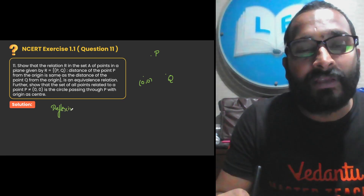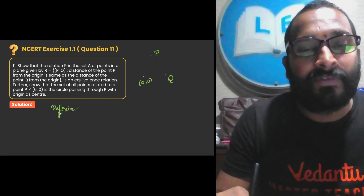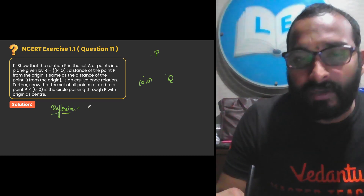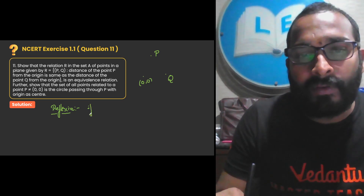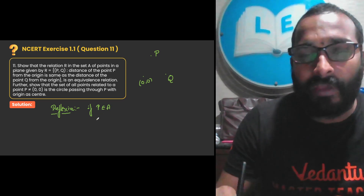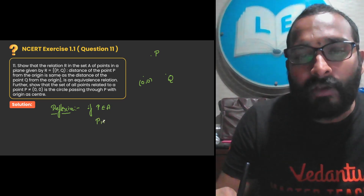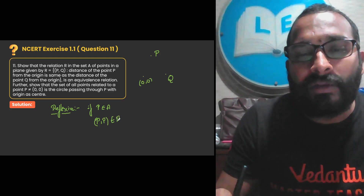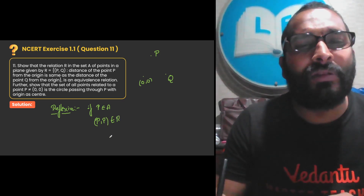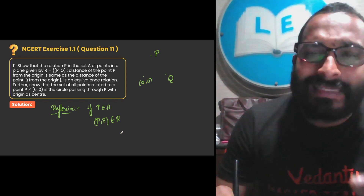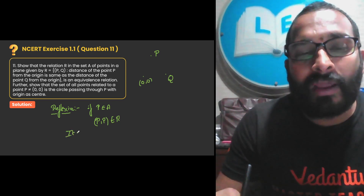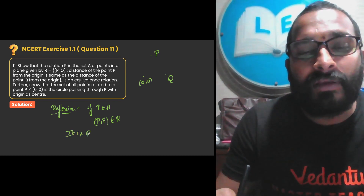Let us check whether the given relation is reflexive. If P is a point, P belongs to set A, then (P, P) should belong to R, because the distance from the origin to point P is the same as the distance from the origin to point P. So it should be reflexive.